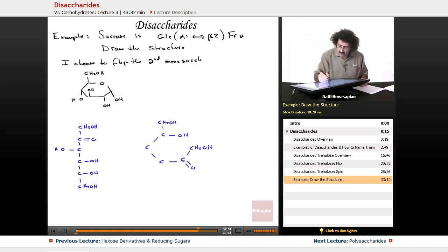I'm going to take this linear form and draw it in such a way to create my ring. I've rotated it, brought the other thing around. I'm going to end up attacking that right there, and what I'm going to create is my beta fructose.